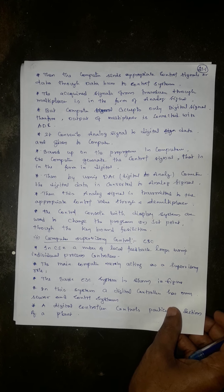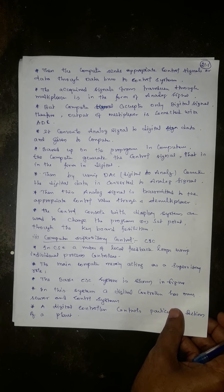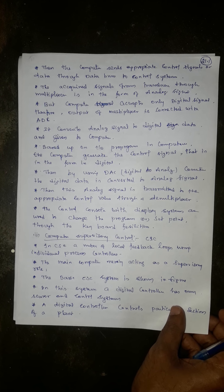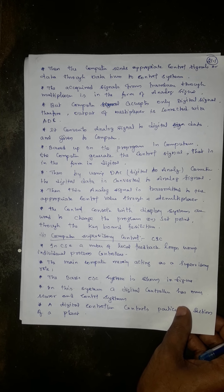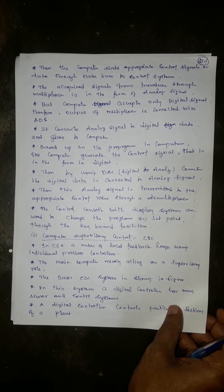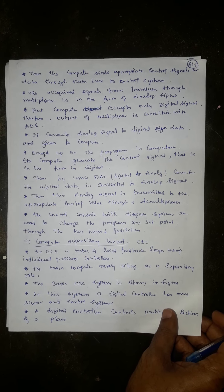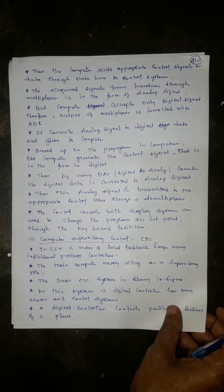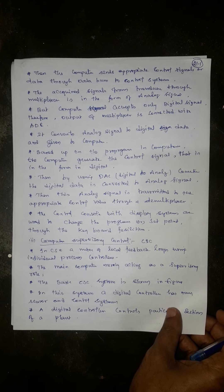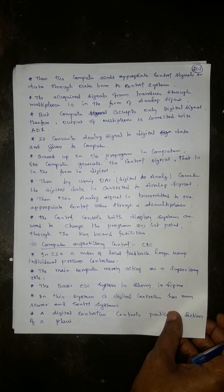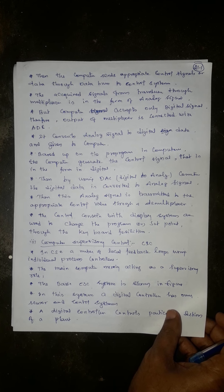Based on the program in the computer, the computer generates a control signal in digital form. Since the final control element, control valve, or control system is an analog device, a digital-to-analog converter (DAC) converts the digital data from the computer into an analog signal. This analog signal is then transmitted to the appropriate control valve through a demultiplexer.